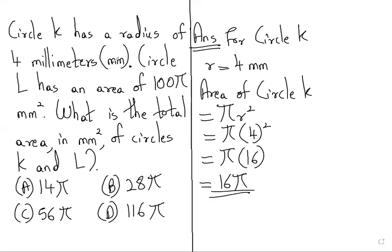And here circle L has an area of 100π mm². That is already given that circle L has an area of 100π mm². So we can write here area of circle L is equal to 100π.